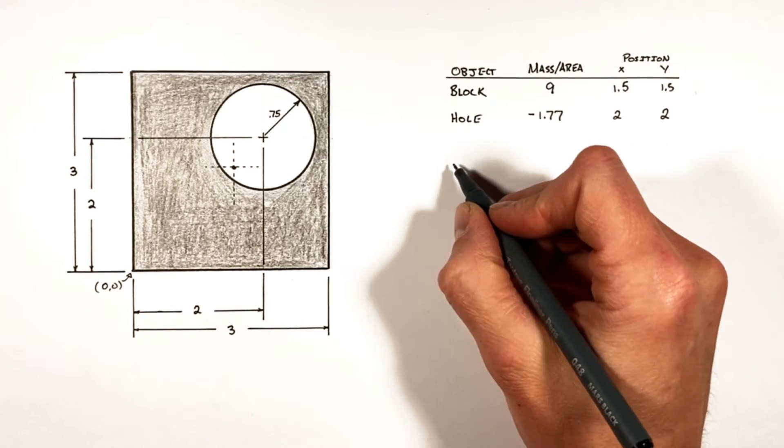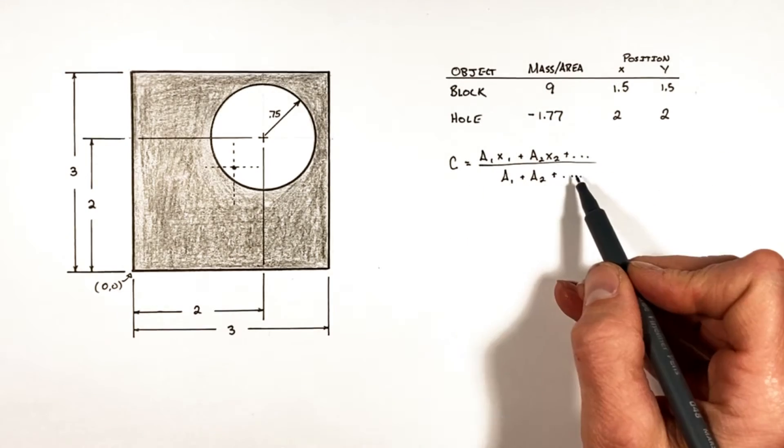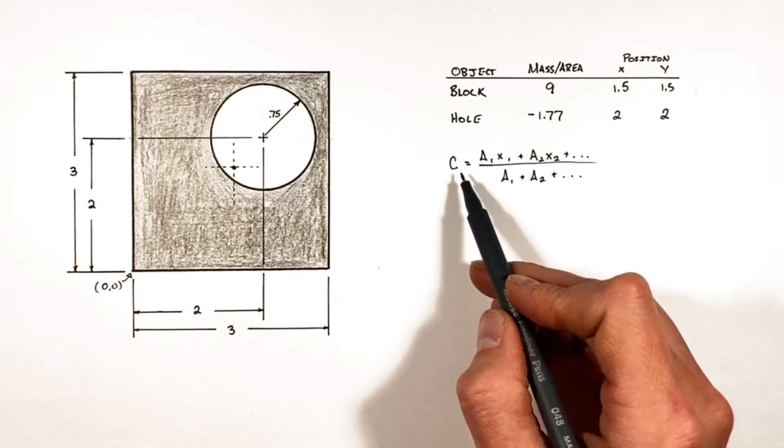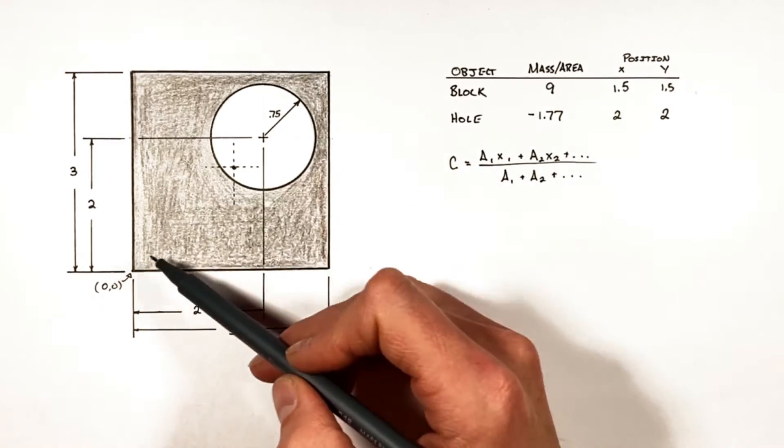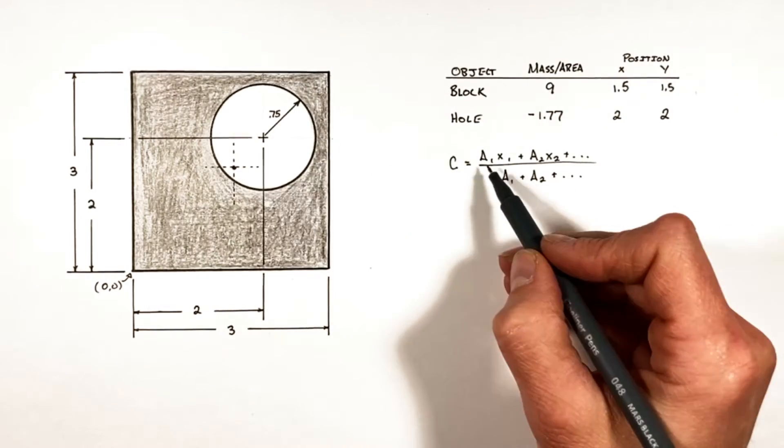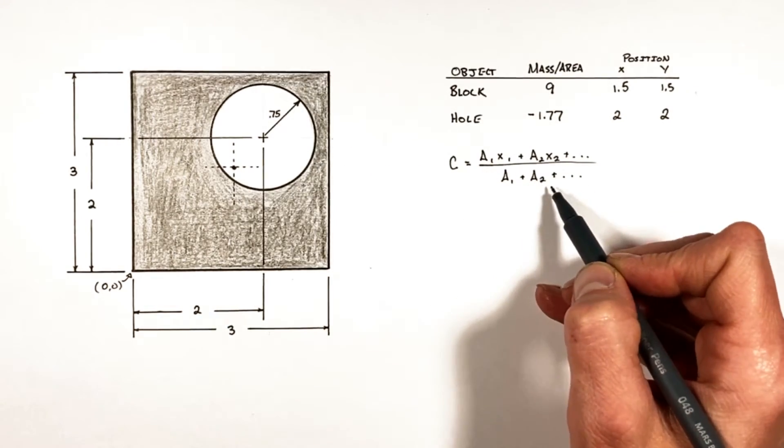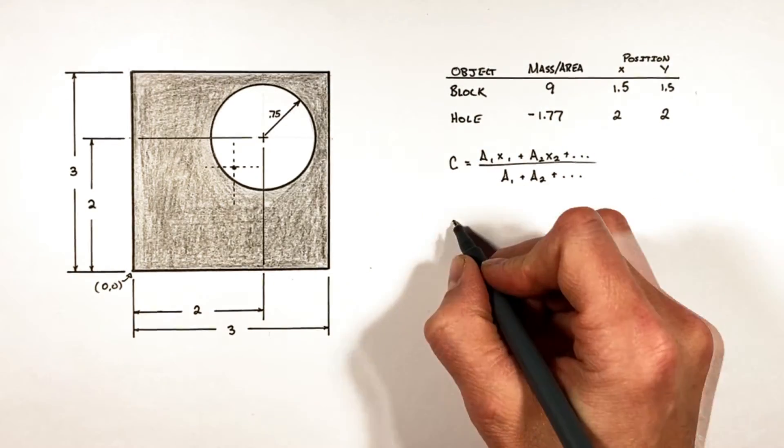Our equation for center of mass or center of area is given by this equation. Now technically speaking, if you wanted to solve for center of mass, you'd put in your values for mass here. But again, going back to the idea that the mass of this block is proportional to its area, we can interchange mass and area here without problems.